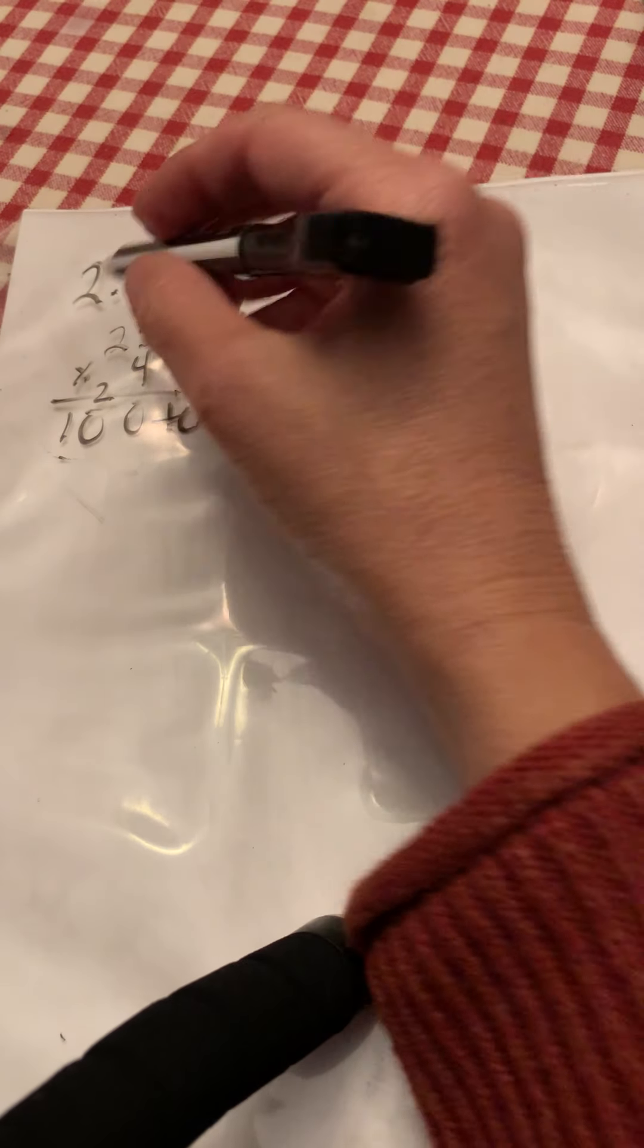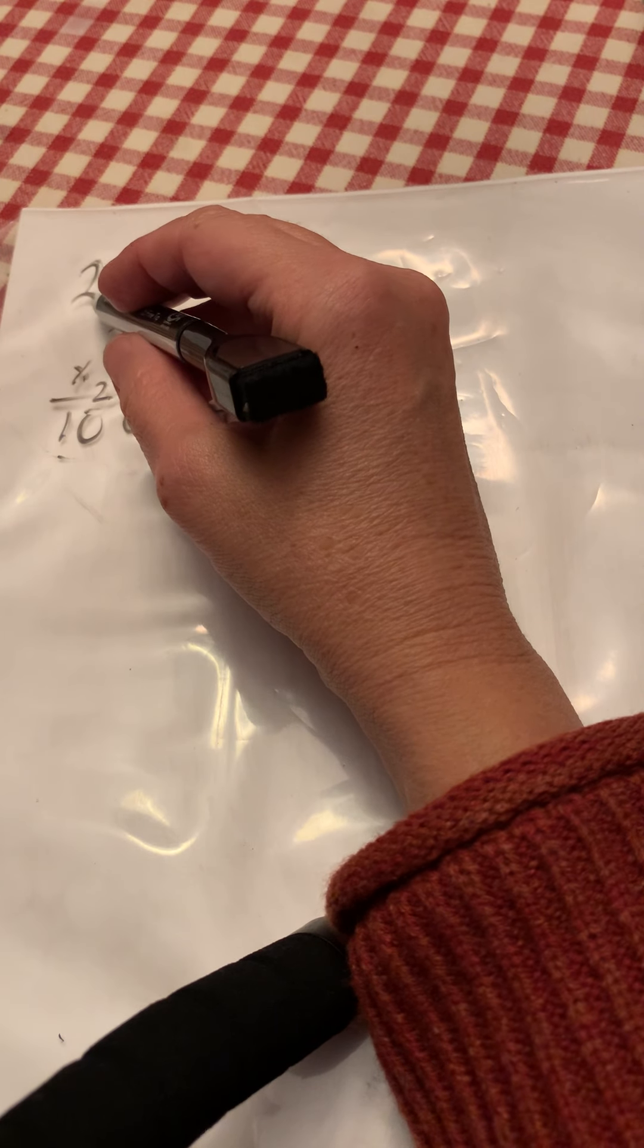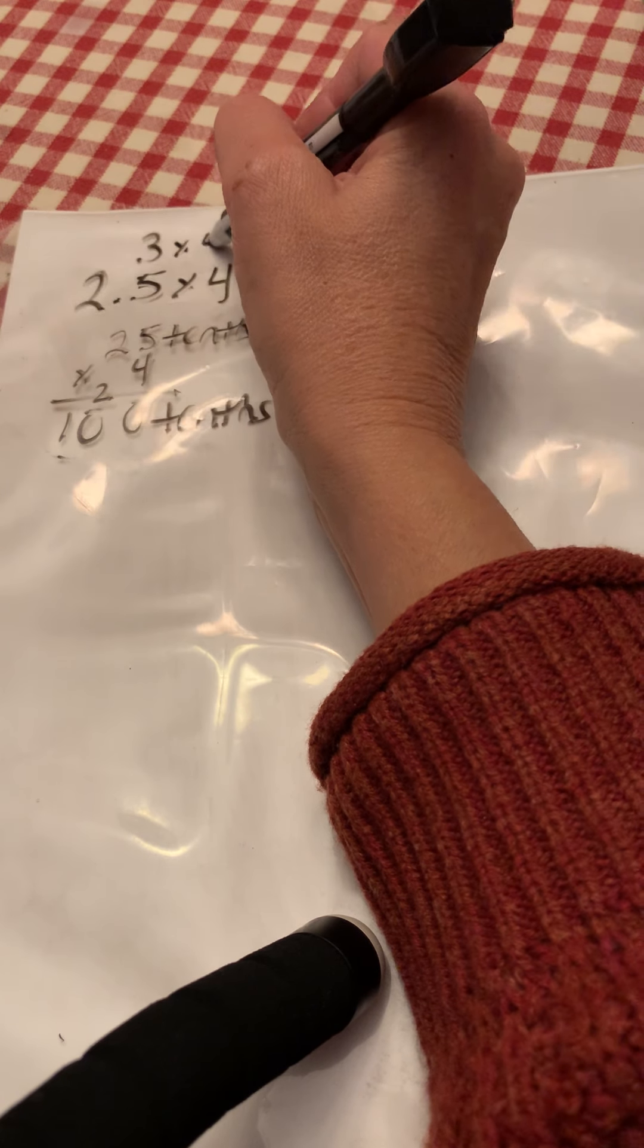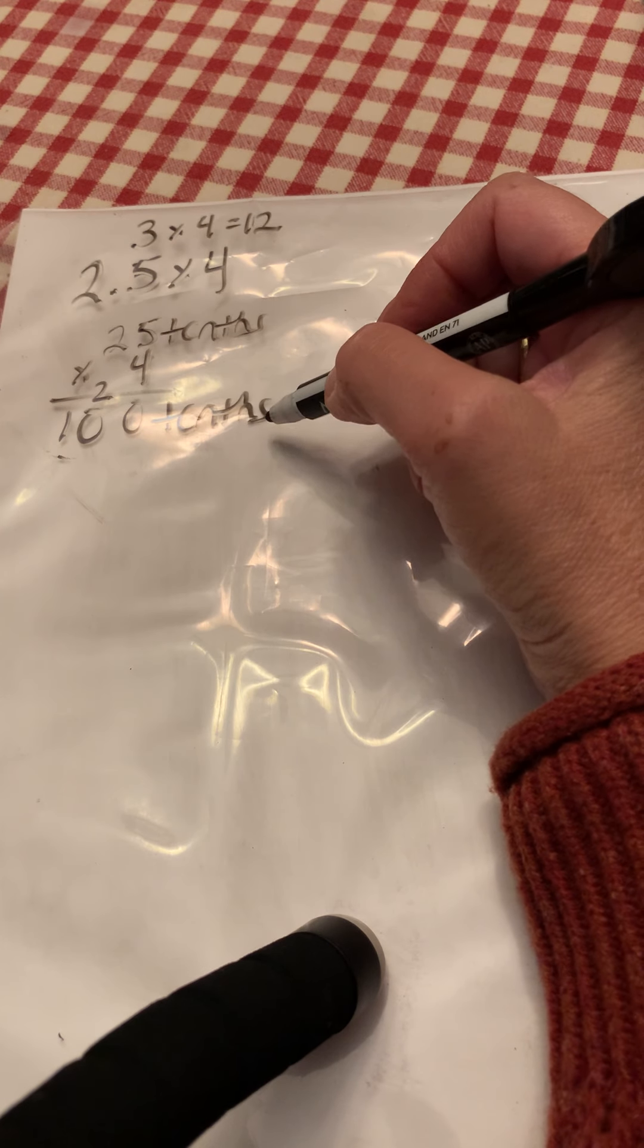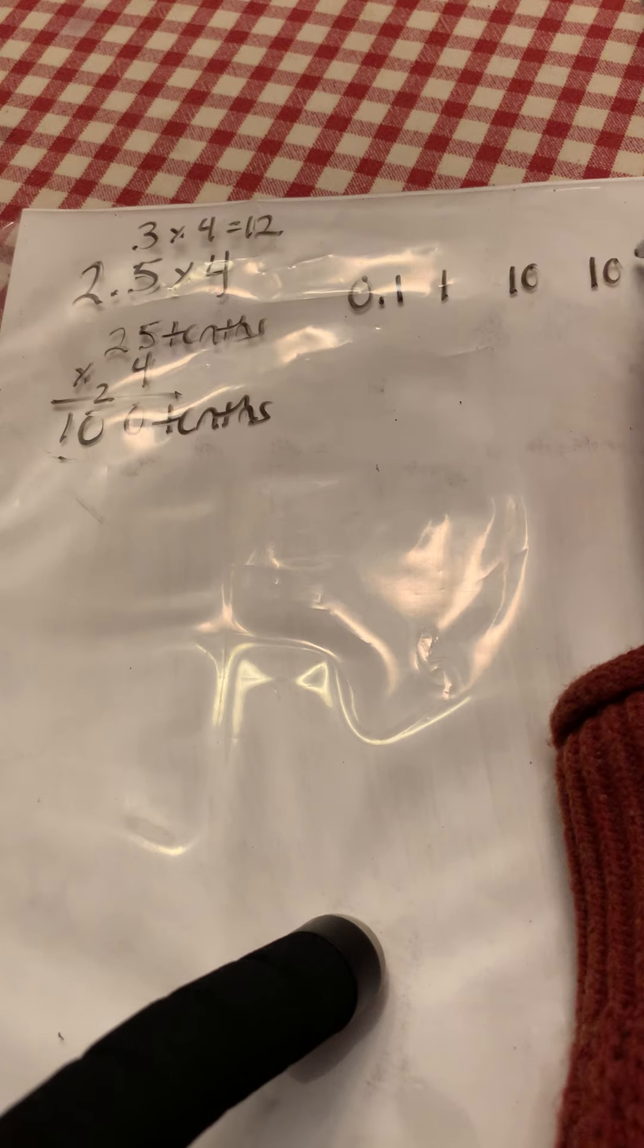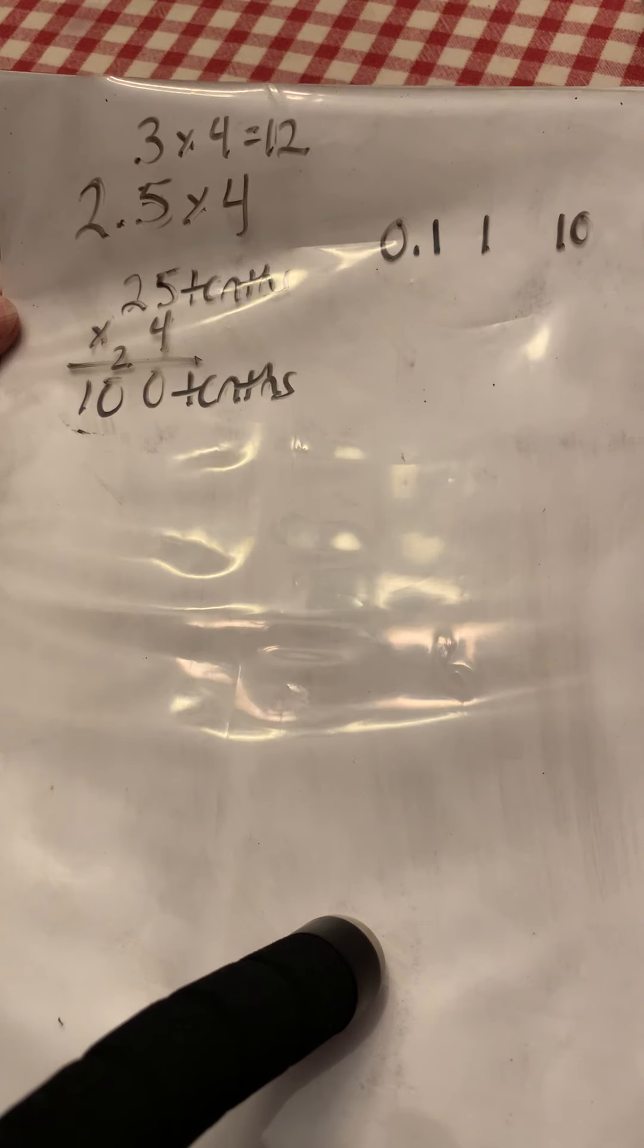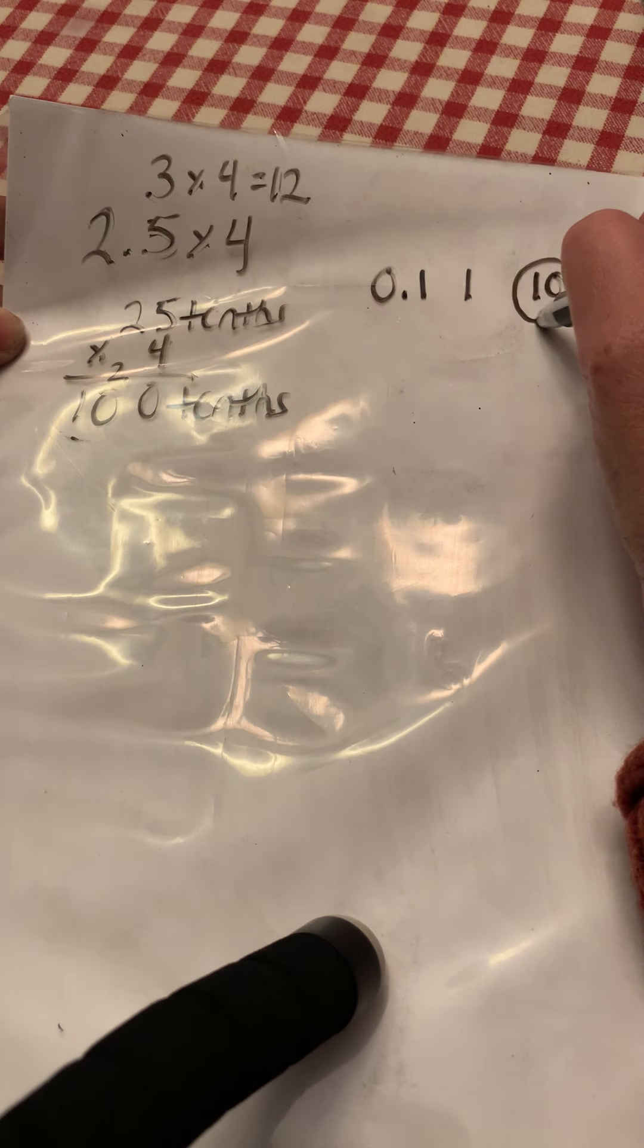The next step I taught you was to look at this number and think of what is reasonable. Well, 2.5 would round to 3, three times four is 12. So what would be the most reasonable answer? They provided you with one tenth, one, ten, or 100. And so based on what you see here and what you guys solved, you would probably say the most reasonable answer is 10.